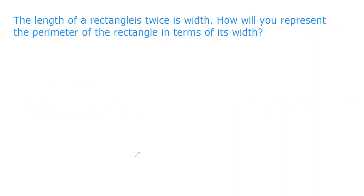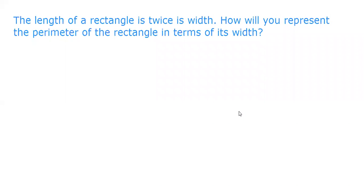Next example: the length of a rectangle is twice its width. How will you represent the perimeter of a rectangle in terms of its width? First, we need the formula for the perimeter of a rectangle. The perimeter is P = 2L + 2W.